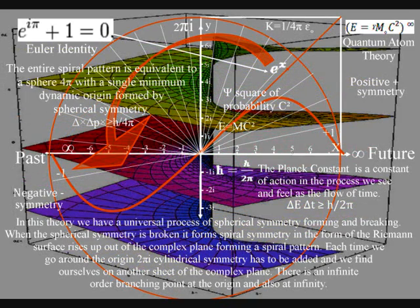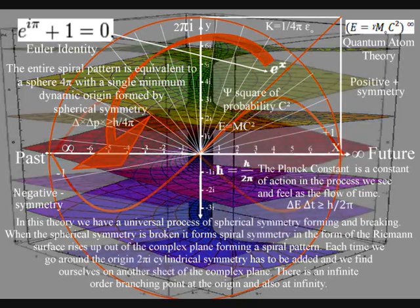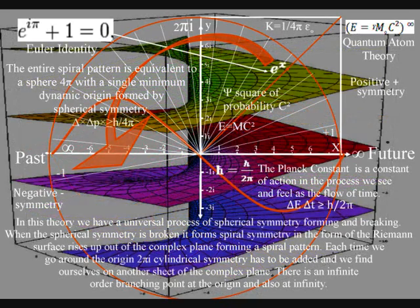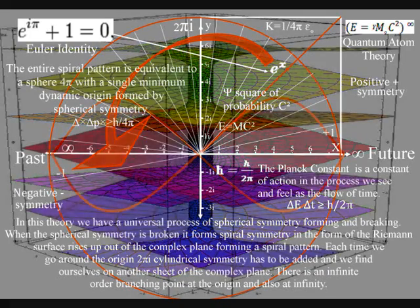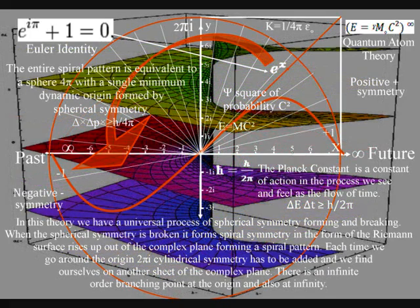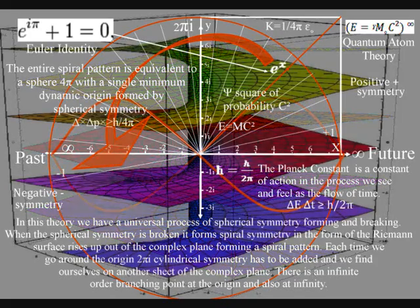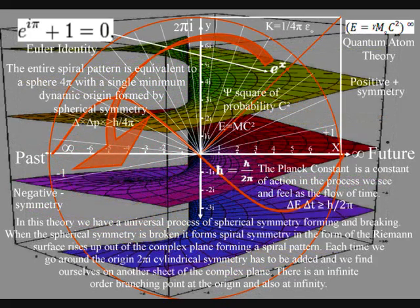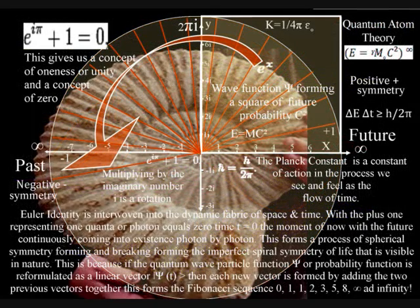The entire spiral pattern is equivalent to a sphere, four pi, with a single minimum dynamic origin formed by spherical symmetry. When the spherical symmetry is broken, it forms the imperfect spiral symmetry of life that is visible in nature.